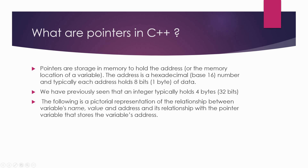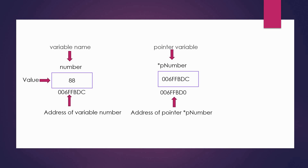Now we'll see a pictorial representation of the relationship between a variable's name, value, and address, and its relationship with the pointer variable. It shows a variable named 'number' with a value of 88 at some point in time — this is the value pointed to by the pointer. This is the address in memory where the variable resides. This address is changeable; the next time the program runs, the address is likely to be different.